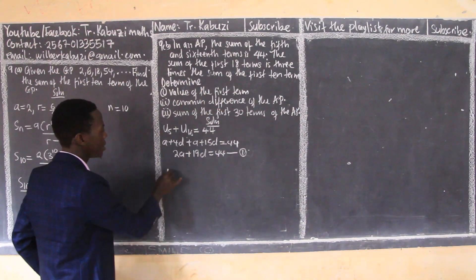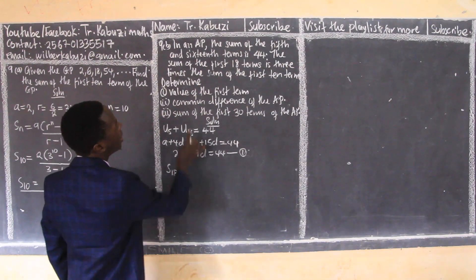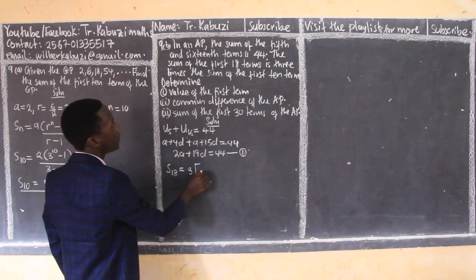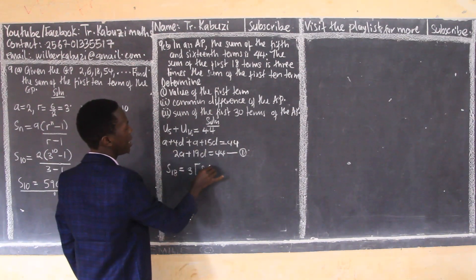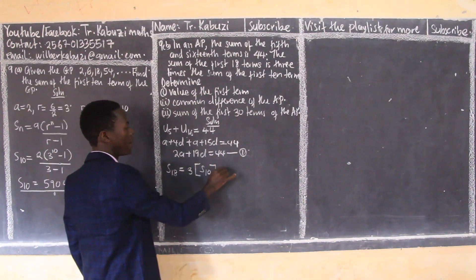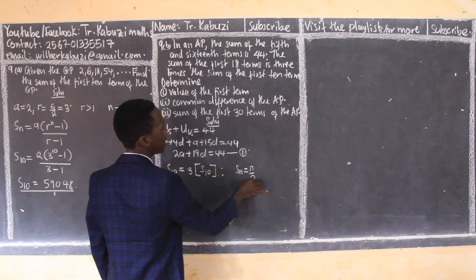Then the other thing is that the sum of the first eighteen terms is three times the sum of the first ten terms. So now we know the formula for the sum of the AP. For an AP, our sum is given by n over 2 times (2a + (n-1)d).